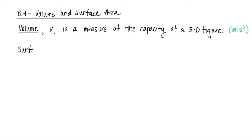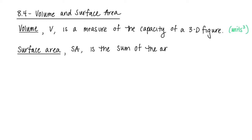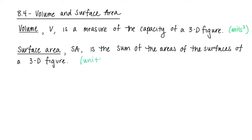Surface area is something different — it is an area, so it's going to be units squared. It's denoted by SA to make the distinction between area and surface area. Basically you're going to have a bunch of sides that make up that specific shape, so surface area is the sum of the areas of the surfaces of a 3D figure.